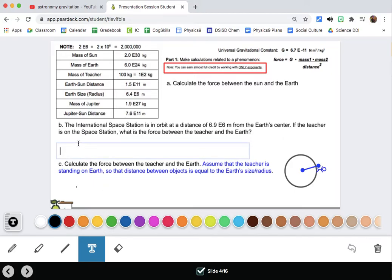I like to use the text tool in Pear Deck for these calculations. It's just so much faster than having to write everything out. I'm going to start by substituting for G, 6.7 times 10 to the negative 11. Then I'm going to figure out what are the two masses that are being attracted here? One of them is the earth, and one of them is the teacher. So the mass of the teacher is 1e2, and the mass of the earth is 6.0 times 10 to the 24.